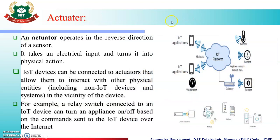Next is the Actuator. An Actuator operates in the reverse direction of a sensor — it takes electrical input and turns it into physical action. A common example is a relay switch connected to an IoT device. If we use it to turn a light on or off, commands are sent to the IoT device over the Internet.